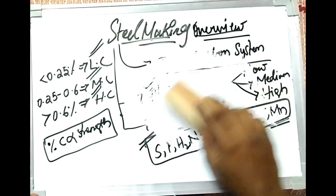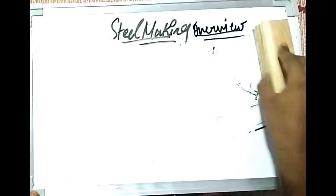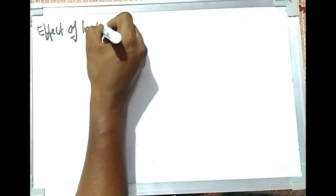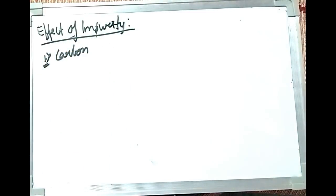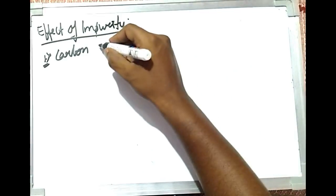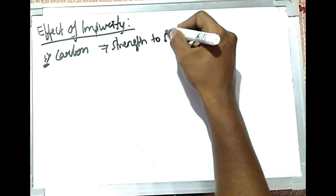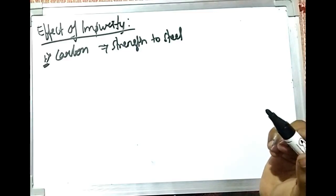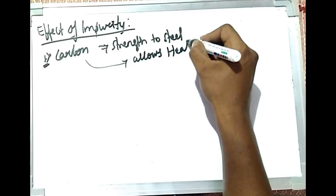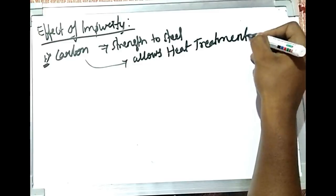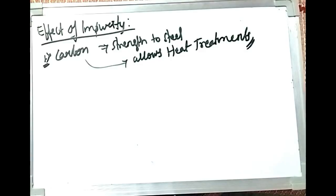Now let's see the effects of these impurity elements. Carbon is not an impurity generally — it is a solute atom. It imparts strength to the steel and reduces ductility. The main importance of carbon is that it allows heat treatments, which are helpful in modifying the properties of the material by varying its microstructure. Carbon is the principal element that allows these heat treatments.